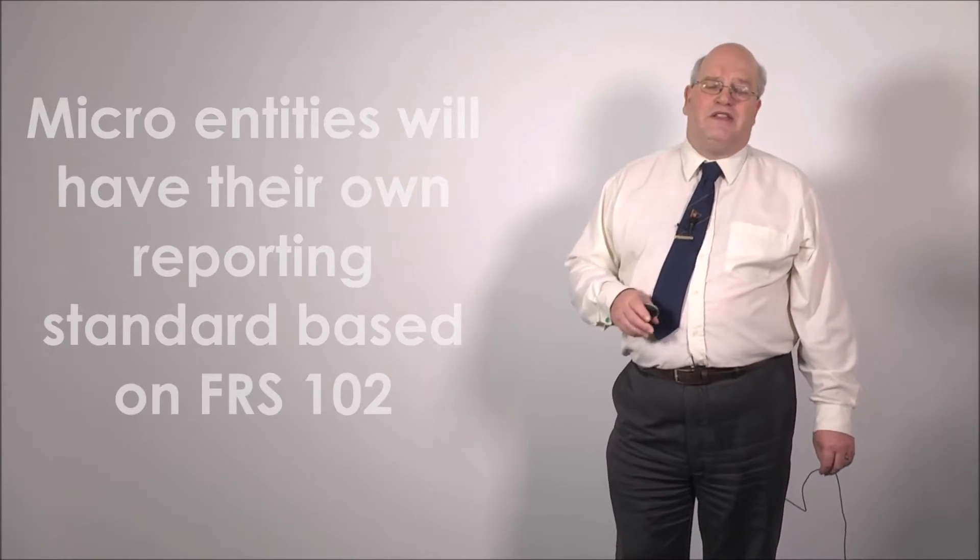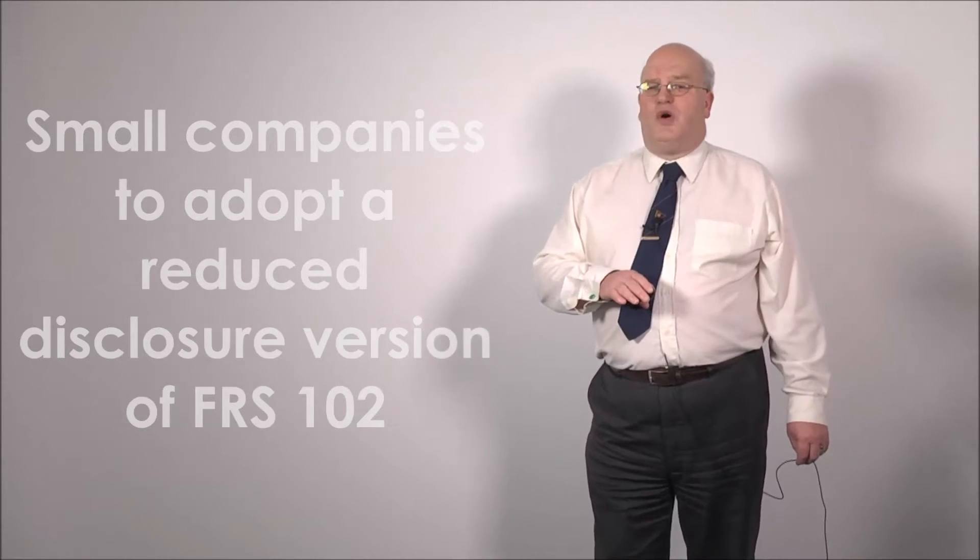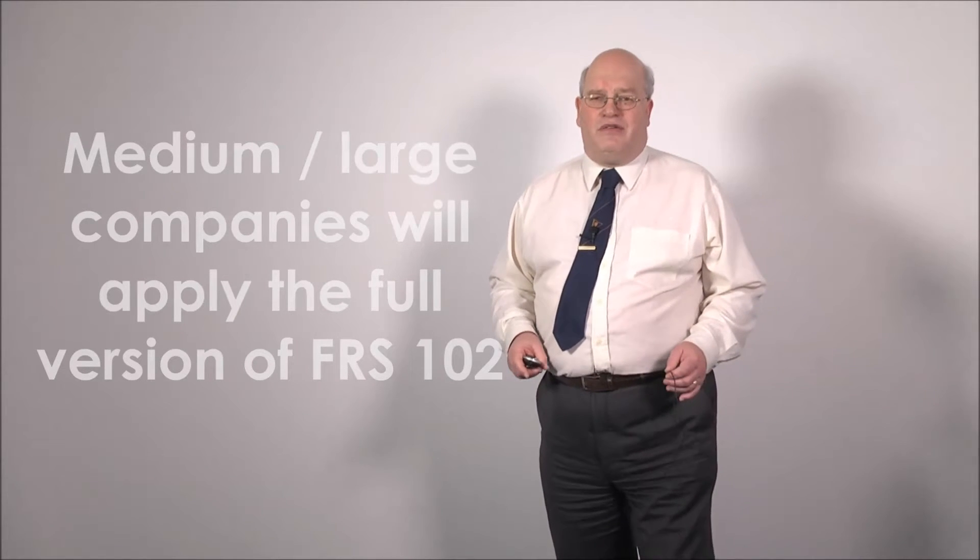Moving forward and looking at how the accounting regime is going to change from the 1st of January 2016: if you're a micro entity, you're going to have your very own reporting standard — the financial reporting standard for micro entities — but the standard itself will be based on FRS 102. If you're a small company, you will be required to adopt the reduced disclosure version of FRS 102, moving from the FRIZI 2015. If you're a medium or large company, you'll be applying the full version of FRS 102 for accounting periods beginning on or after the 1st of January 2016.